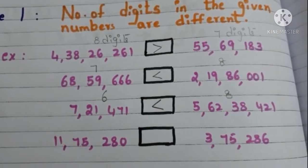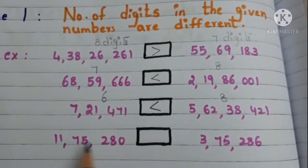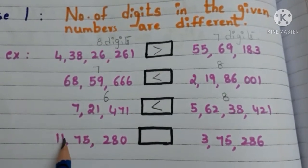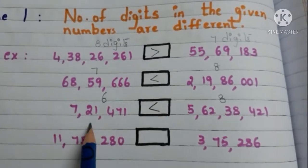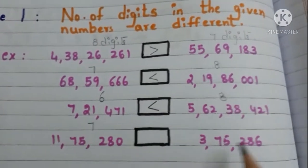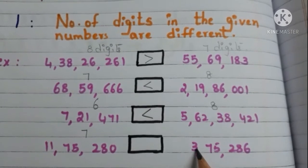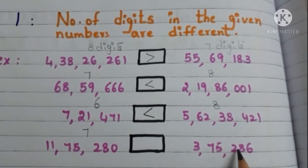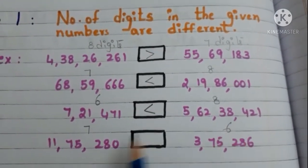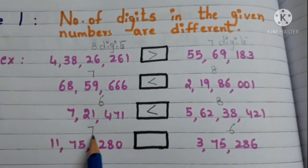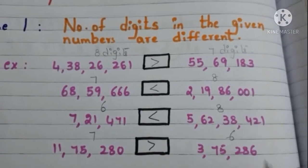Let us go to the last one. First, let us count how many digits are there in this number. 1, 2, 3, 4, 5, 6, 7. 7 digits. Now count how many digits are there in this number. 1, 2, 3, 4, 5, 6. 6 digits. So a 7-digit number is greater than a 6-digit number.